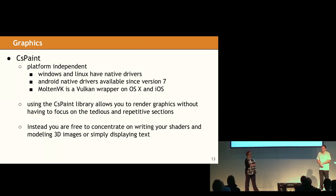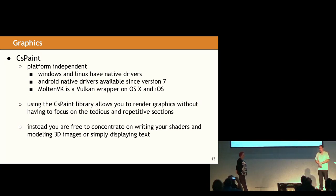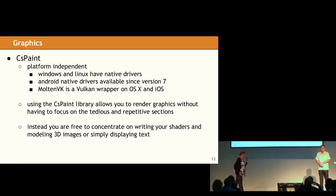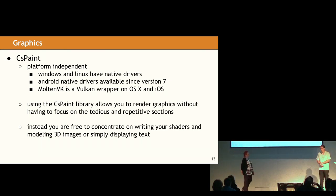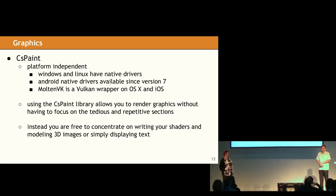Since Vulkan is available on every major current desktop and mobile platform, CS Paint will run natively pretty much everywhere. On Apple platforms, you'll want to use MoltenVK, which is the Vulkan wrapper that converts the Vulkan calls to Metal calls. Using CS Paint means you don't have to do quite as much of the really tedious and repetitive API work that Vulkan requires. Instead, you can spend your time where it's most valuable, which is working on your shaders and designing your scene and rendering your application.